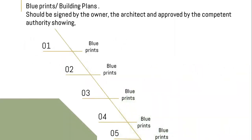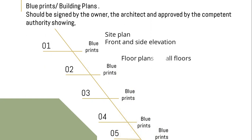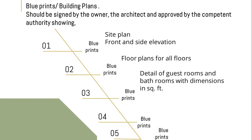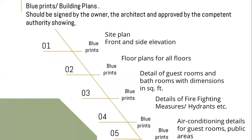Let's begin with part two of the HRACC information. Blueprints or building plans are to be signed by the owner and the architect and must be approved by the competent authority, which needs to show the site plan, front and side elevation, floor plans of all floors, details of guest rooms and bathrooms with dimensions and square feet, details of firefighting measures and hydrant, and air conditioning details for guest rooms and public areas.